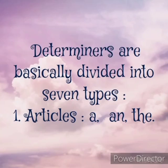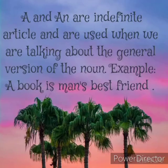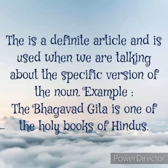Let's have an example of each type to make you understand. First, articles — words like 'a', 'an', and 'the'. 'A' and 'an' are indefinite articles and are used when we are talking about the general version of the noun. For example, 'a book is man's best friend.' Here we are referring to all categories of book and not any specific one, so 'a' is used here.